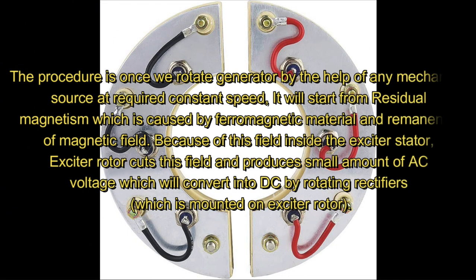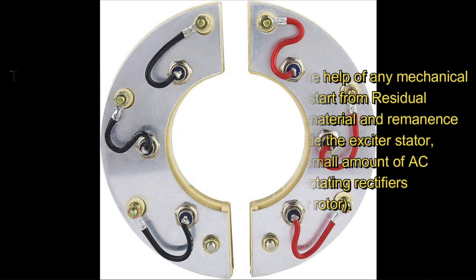The procedure is: once we rotate the generator by the help of any mechanical source at the required constant speed, it will start from residual magnetism, which is caused by ferromagnetic material and remnants of the magnetic field. Because of this field inside the exciter stator, the exciter rotor cuts this field and produces a small amount of AC voltage, which will be converted into DC by rotating rectifiers mounted on the exciter rotor.